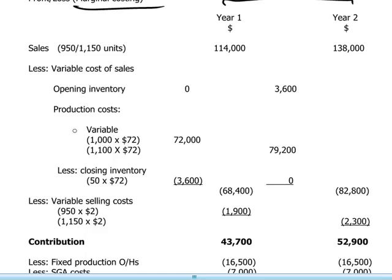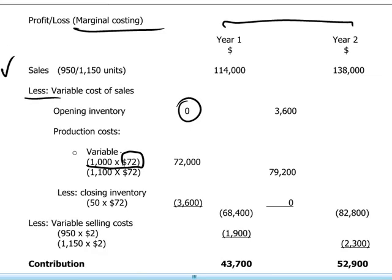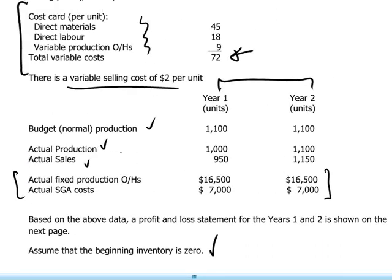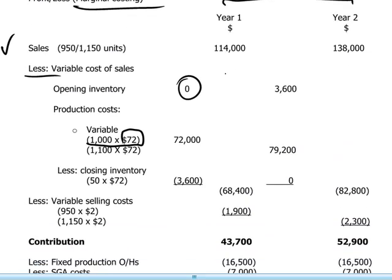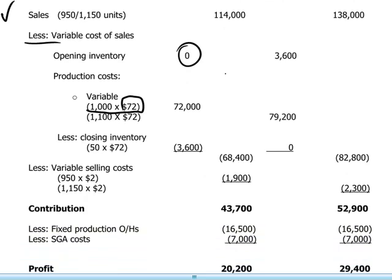The profit and loss starts with sales for years one and two, less the variable cost of sales. Opening inventory is zero, and production costs are calculated on the basis of 1,000 units produced in year one at a production cost of $72 per unit — we can see the $72 from the cost card. We produce 1,000 units and sell 950, so there are 50 units left in closing inventory valued at $72 per unit, which is deducted from $72,000 to give us the variable cost of sales.